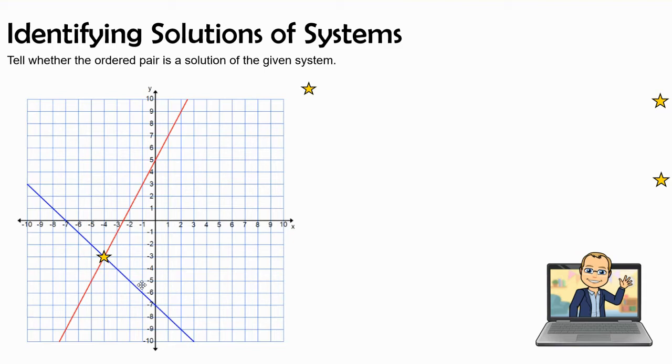Today, we are going to tell whether the ordered pair is the solution of the given system. I'm going to pull out our first question. Now these equations don't correlate to the graph, but what I want to show you is that in a situation where (2,1) could be on a line, it could be on this line somewhere, or it could be on this line somewhere.